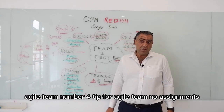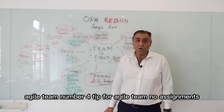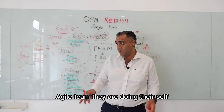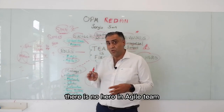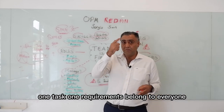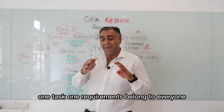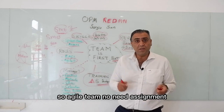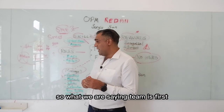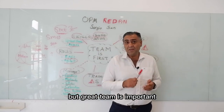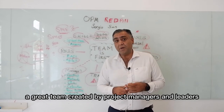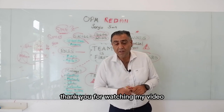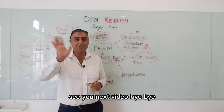Tip four: Agile team — no assignments. An Agile team is self-managing and self-organizing. They choose what they will do. There is no hero in an Agile team — one task, one requirement, belongs to everyone. If one person fails, everybody fails. So in Agile, no need for assignment. What we are saying: team is first, but a great team is important. Great teams are created by project managers and leaders. Enjoy creating your great team. Thank you for watching — see you in the next video, bye bye.